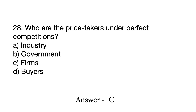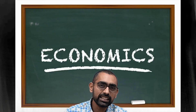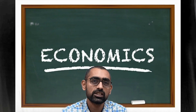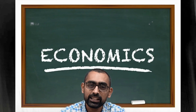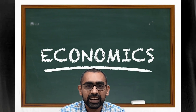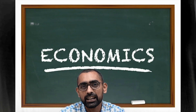Question number 28 is again from the basics of economics about perfect competition. In a perfect competition, firms will not have any control over the price — they will not be the price makers. They will be the price takers, having to accept the price determined by the equilibrium of supply and demand. So the answer will be C: firms will be the price takers. These are very direct questions, and if you are well versed with basics of economics, it saves time, gives you marks, and is a great bonus to your score.